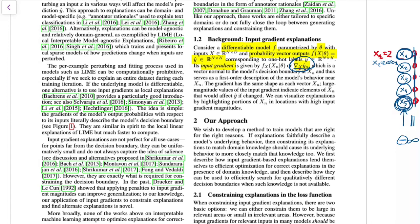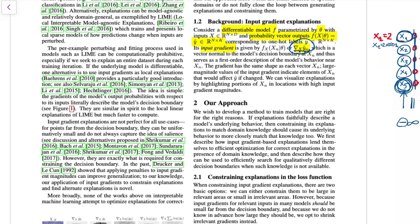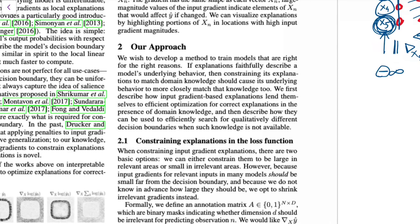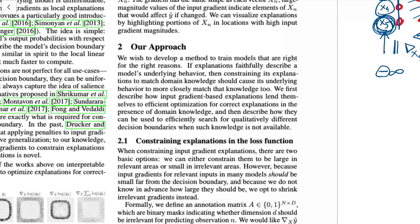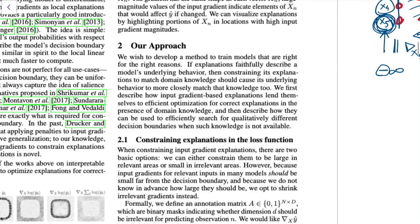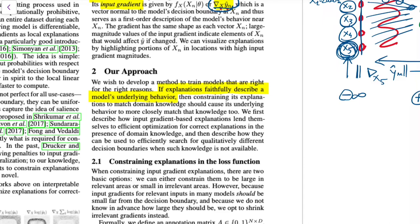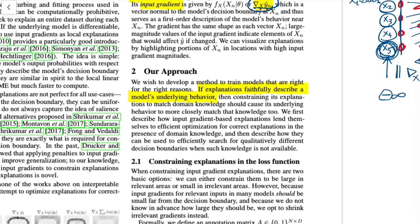Now that we understand input gradients, let's look at the philosophy of their approach. They make the assumption that explanations faithfully describe the model's underlying behavior. In reality, this gradient method is not perfect — none of the interpretability methods are. But it's a fine assumption because as interpretability methods keep advancing and become more faithful, this assumption might approach truth. They believe that constraining the model's explanations to match domain knowledge should cause the underlying behavior to more closely match that knowledge too.